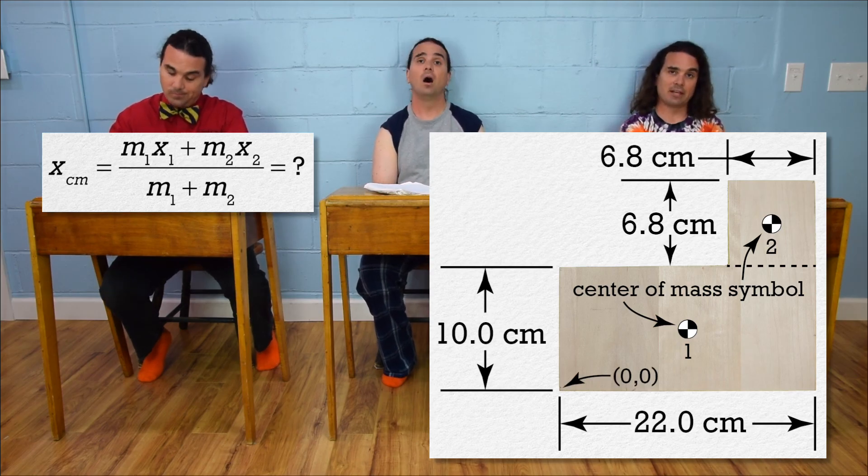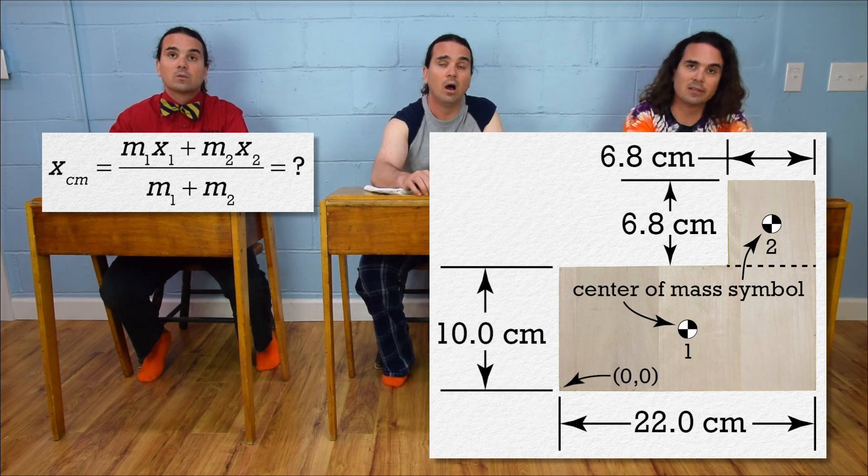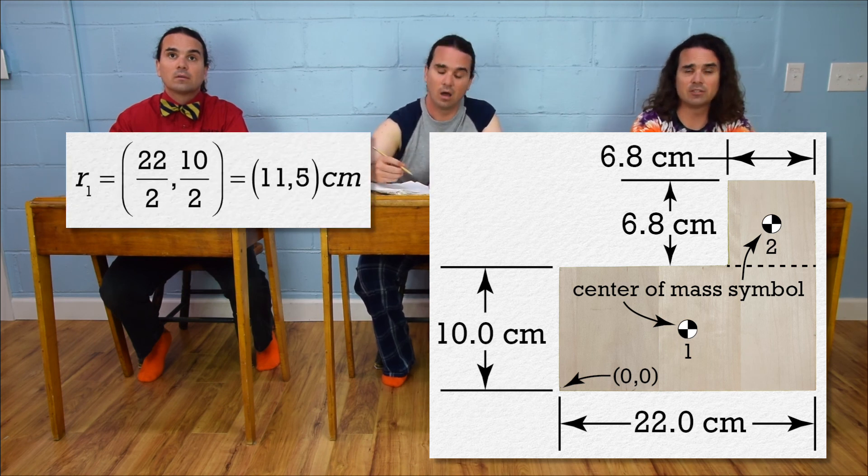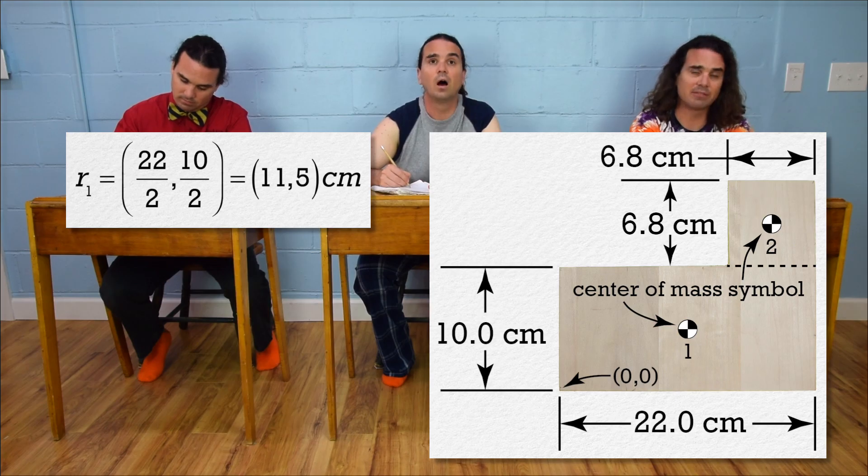Right. Then, the center of mass of piece 1 is at x equals half of 22 or 11 centimeters and y equals half of 10 or 5 centimeters.